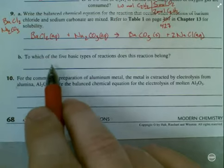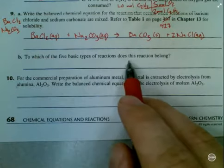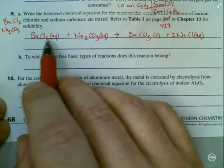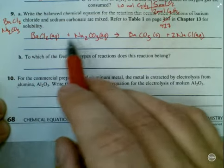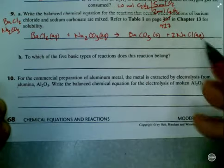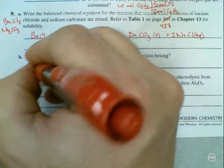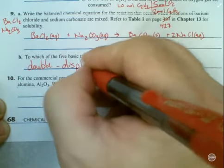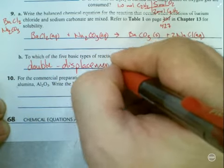Moving on to B. To which of the five basic types of reactions does this reaction belong? Well, the key here is I have two different binary compounds, and in the end, I have two different binary compounds. So this is a double displacement.